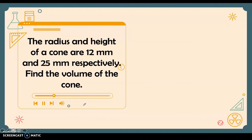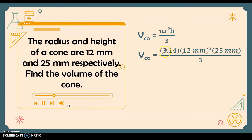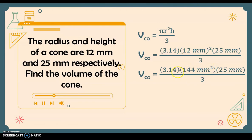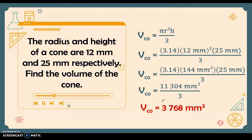Word problem: The radius and height of a cone are 12 millimeters and 25 millimeters respectively. What is the volume of the cone? Using pi r squared h divided by 3: 3.14 times 144 (12 squared) times 25 gives 11,304 cubic millimeters. Dividing by 3, the volume of the cone is 3768 cubic millimeters. That concludes the lesson on the volume of a cone.